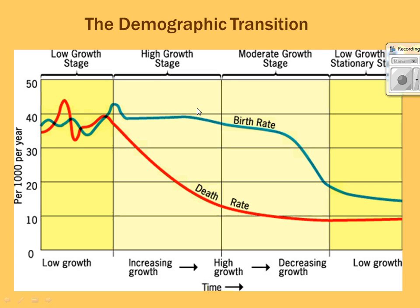Stage two is considered high growth. This happens when the death rate decreases while the birth rate remains high — people are having lots of babies but improvements in medication, vaccinations, or clean water and sanitation lower the death rate. So you have just as many babies being born, but fewer are dying, making overall growth very high.